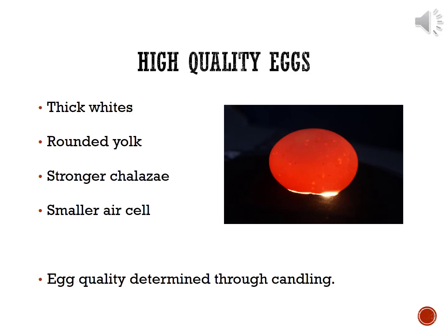If you are cooking and eating an egg, you want a high quality, fresh egg. High quality eggs have thick egg whites, a very rounded yolk, a strong chalaza holding the yolk in place, and a very small air cell on top. As eggs get older, the egg whites become thinner, the yolk flattens, the chalaza weakens, and the air cell gets much larger. Fortunately, food manufacturers determine egg quality for us through a process known as candling — they put a light up to the egg to see its internal structure and determine whether it's a higher or lower quality egg.